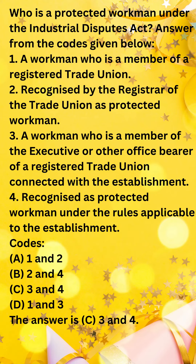Who is a protected workman under the Industrial Disputes Act? Answer from the codes given below. 1. A workman who is a member of a registered trade union. 2. Recognized by the registrar of the trade union as protected workman. 3. A workman who is a member of the executive or other office bearer of a registered trade union connected with the establishment. 4. Recognized as protected workman under the rules applicable to the establishment.